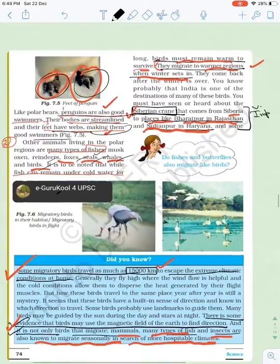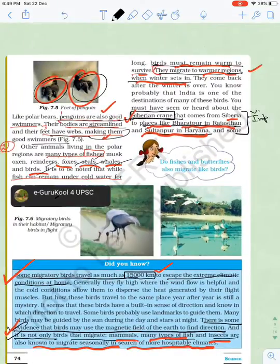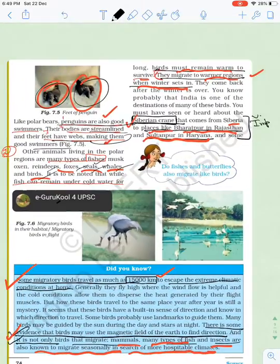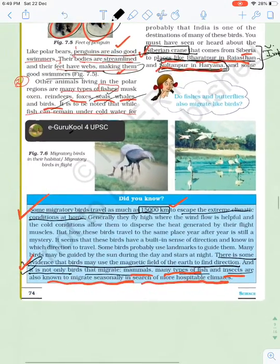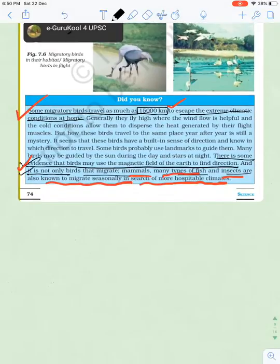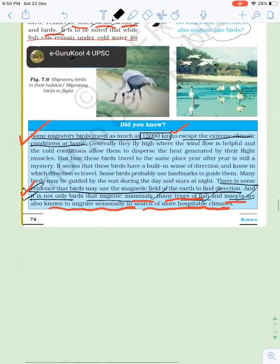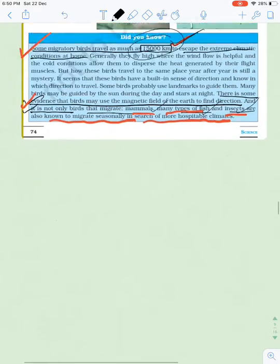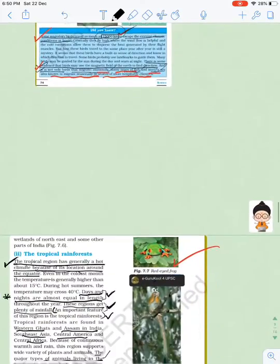In our country also, some birds come in winter, like Siberian cranes to Bharatpur, Rajasthan, and Sultanpur Lake near Gurugram in Haryana. Mammals also migrate, and fishes and insects also migrate. Birds have such good brains that they fly about 15,000 kilometers and come back to the same place.